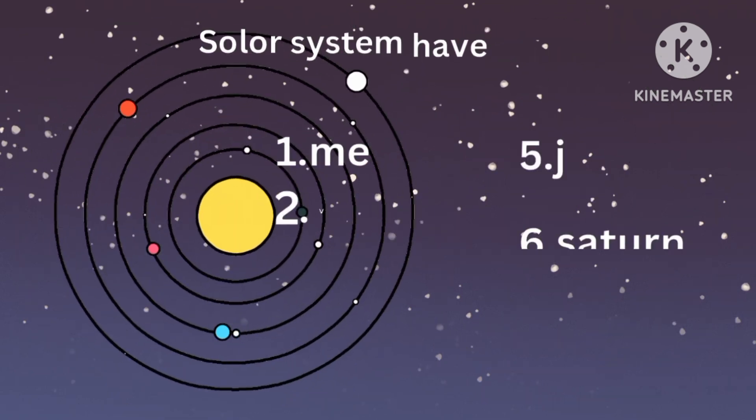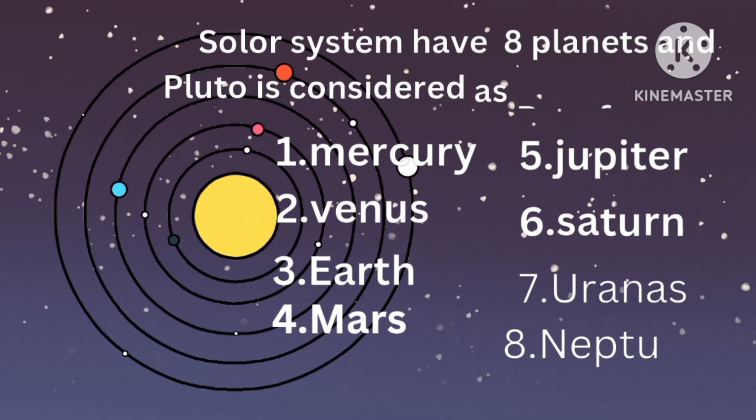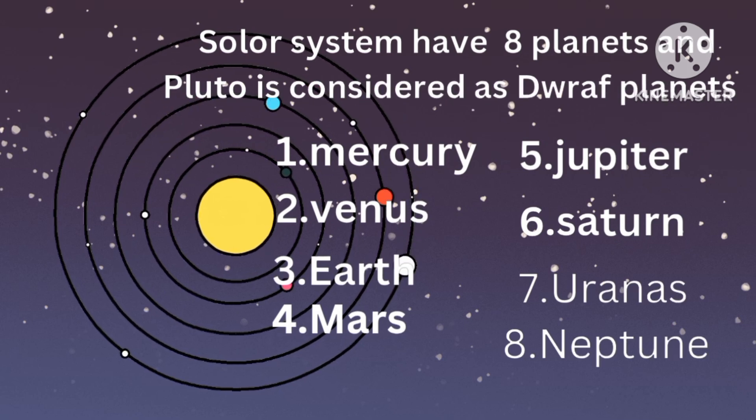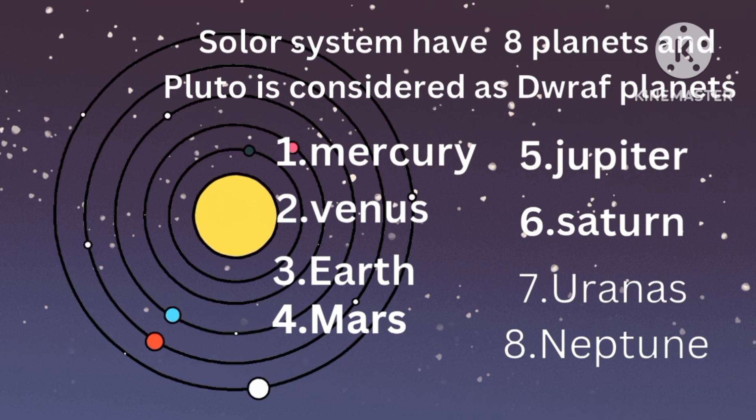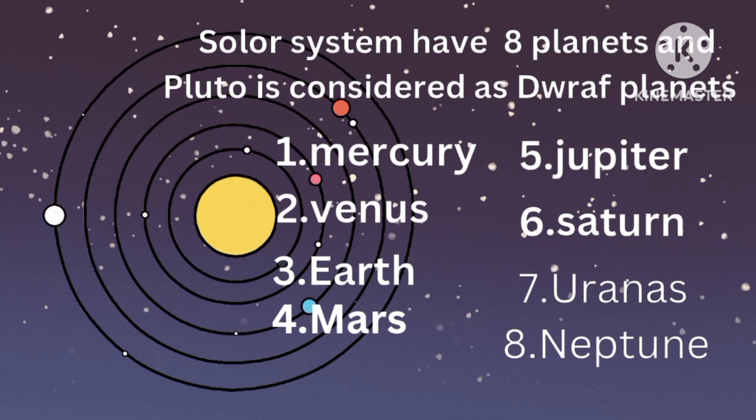The Solar System planets: Mercury, Venus, Earth, Mars, Jupiter, Saturn, Uranus, Neptune.